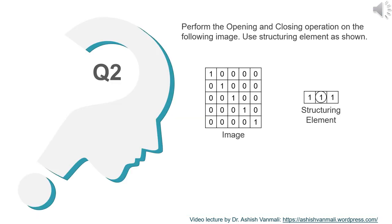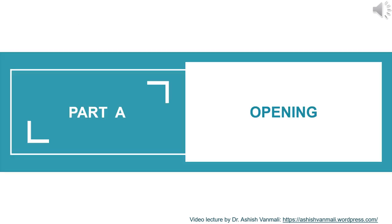Let's go for the second question: perform the operation of opening and closing for the following image using the structuring element shown. Observing the structuring element, it is not square but it is of odd size — 1 row and 3 columns. Hence this structuring element is symmetric, meaning its reflected version B-cap is the same as the original B.